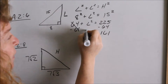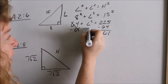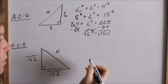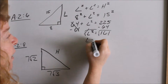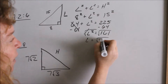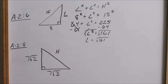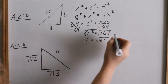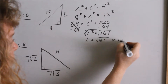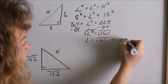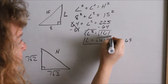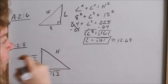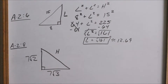We want the leg, so we take the square root of both sides. The square root and the square cancel — square root is the opposite of squaring. The square root of 161 cannot be simplified, so that would be approximately 12.69, but you can leave it in radical form.